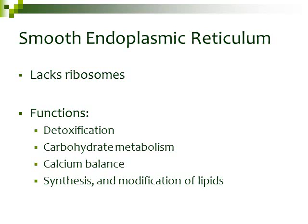The smooth ER lacks ribosomes, so it looks smooth. The smooth ER has different functions: it can help with detoxification of the cell and breaks down different toxins. It also handles carbohydrate metabolism, helps with calcium balance in the cell, and can synthesize and modify lipids. That modification and creation of lipids is a really important function of the smooth ER.